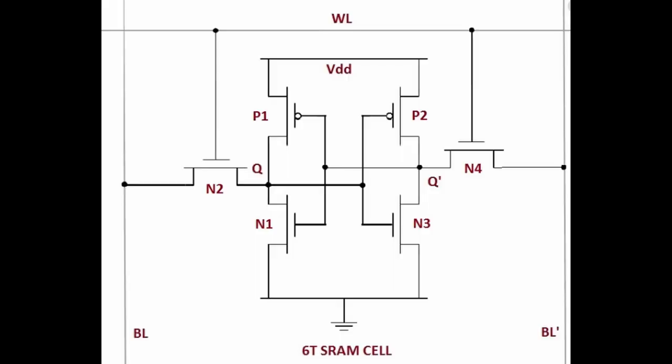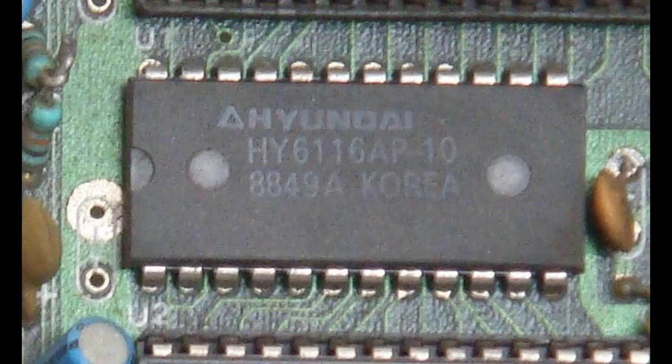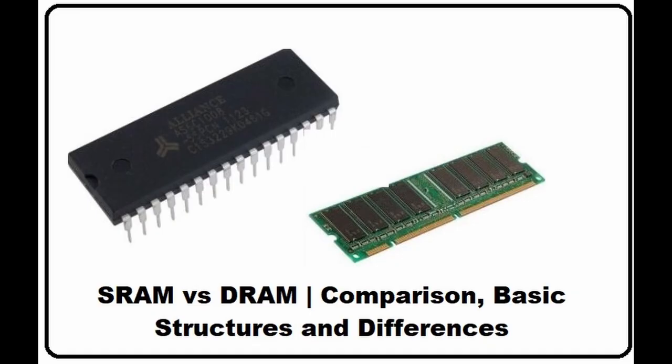In the 80s, static memory, or SRAM, was invented. SRAM uses transistors to store data, which made it faster and more reliable than DRAM. This was the first time transistors were used for memory, which is a very important breakthrough. SRAM is also a volatile memory like DRAM.